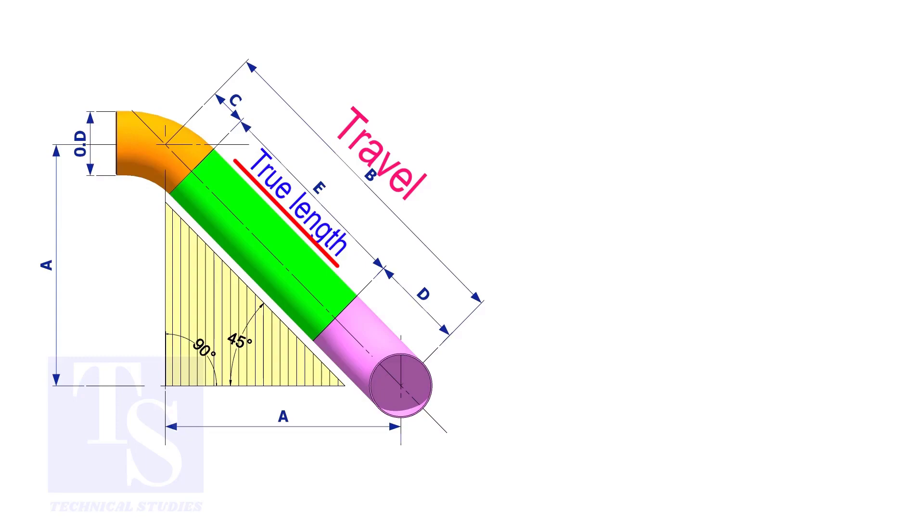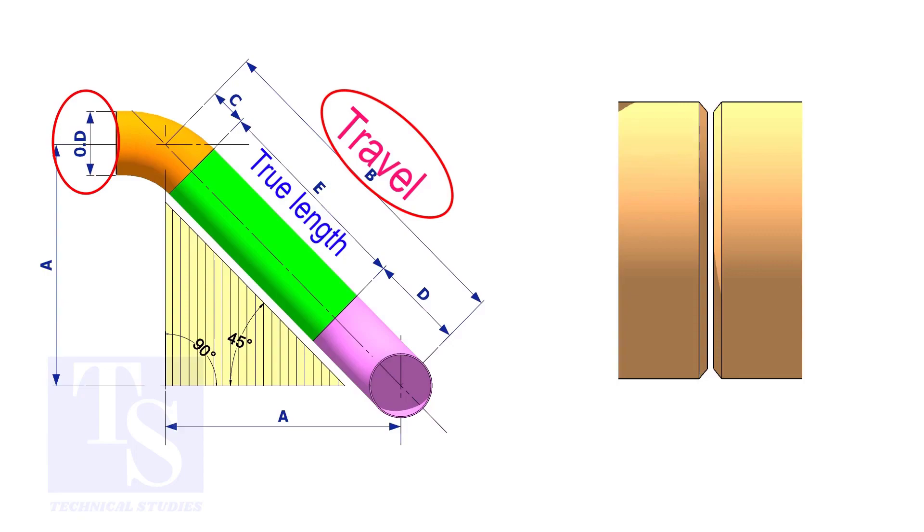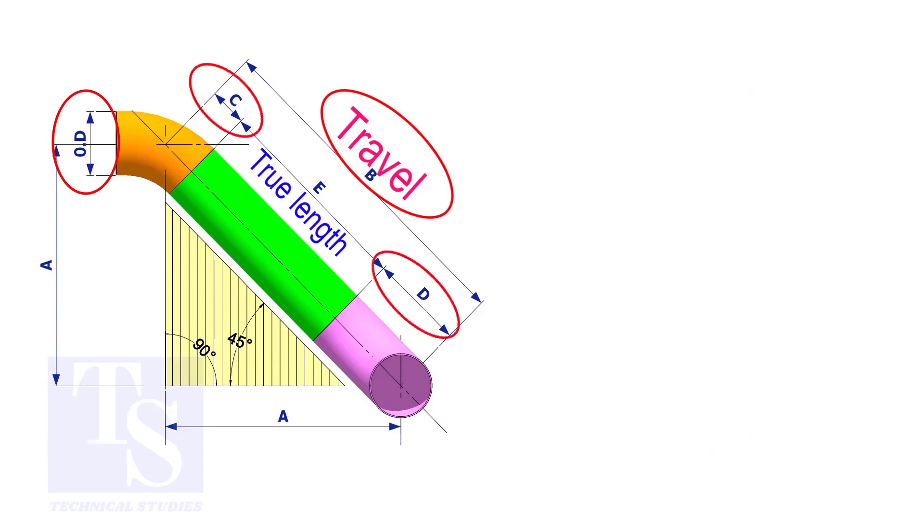To calculate the true length or the cut length, we need to know the travel length, the diameter of the pipe, the joint gap, and the elbow center. The elbow center is sometimes called takeoff length.